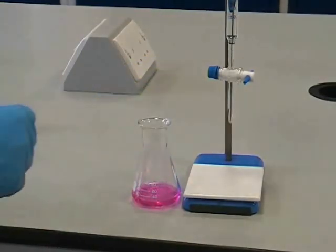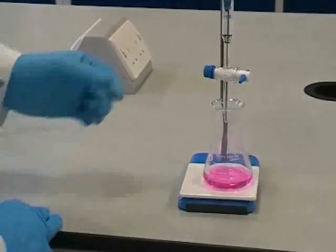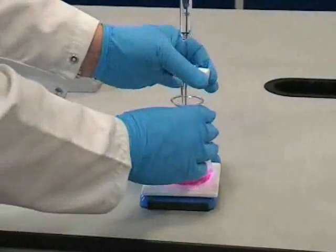Now we can carry out a rough titration, sometimes called an overshoot titration, to find out roughly how much of our other solution is needed to neutralize the solution in the conical flask.